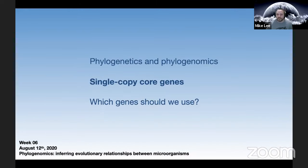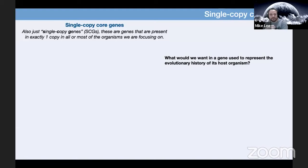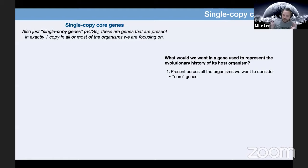This brings us to single copy core genes and why they are so important in phylogenomics. Single copy core genes — also called just single copy genes — are genes that are present in exactly one copy in all or most of the organisms we are focusing on. Just as when making a single gene tree, we want the gene to be present in all things we're considering. This is where the 'core' part comes from — core typically refers to genes present in at least one copy in all organisms we're looking at, as discussed in the pan genomics seminar.